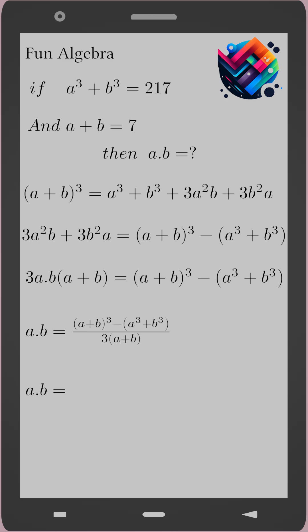Now substitute the values: ab = (7³ - 217) / (3 × 7), and the result is ab = 6. And that is the final answer.